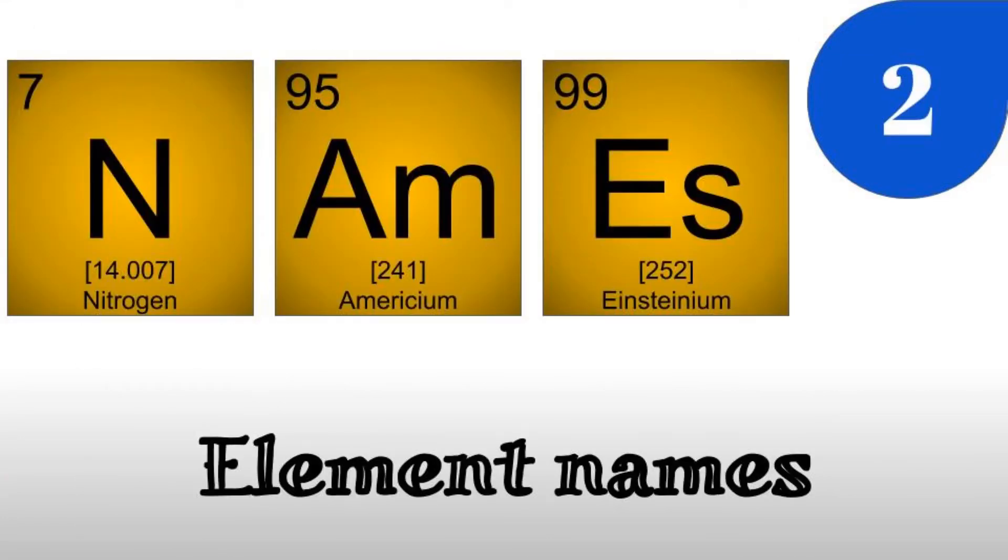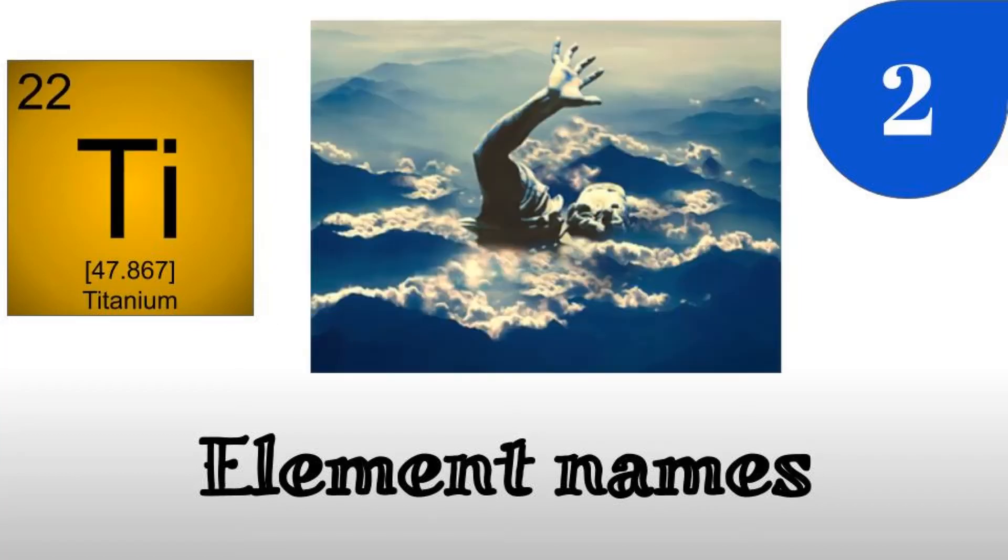Number 2: Element names refer to six different ideas. The first one is a mythological concept or character. One example of this is the element Titanium, which is named after the mythological characters.